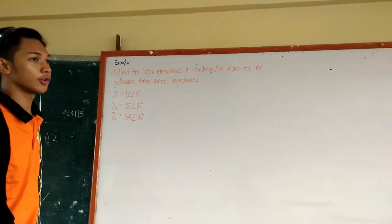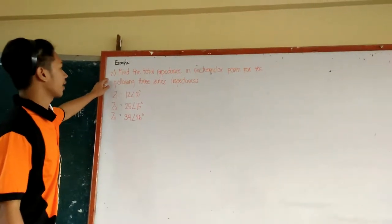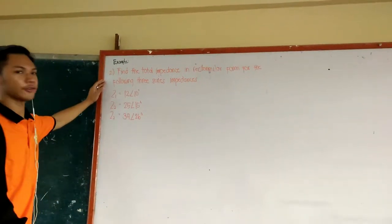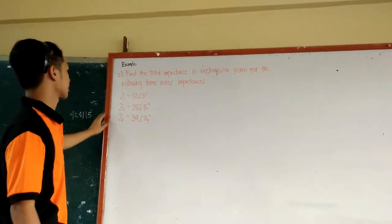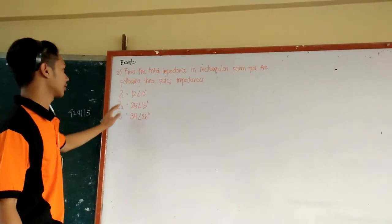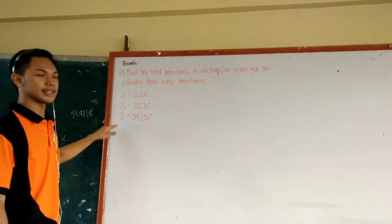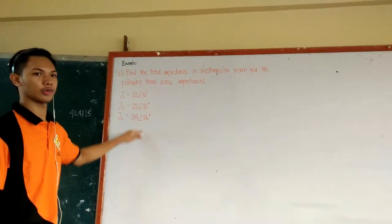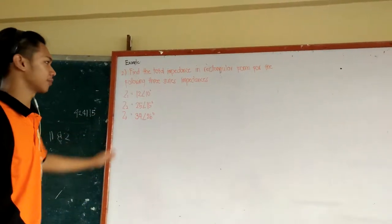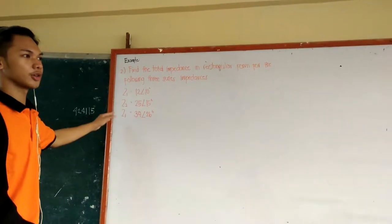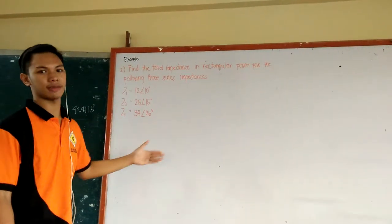Here we have Example 2. Find the total impedance in rectangular form for the following three series impedances: Z1 equals 12 at angle 10 degrees, Z2 equals 25 at angle 15 degrees, and Z3 equals 34 at angle 26 degrees. Since the given impedances are in polar form, we need to convert them first into rectangular form so we can simply add them all.